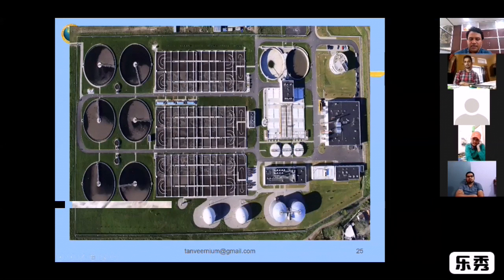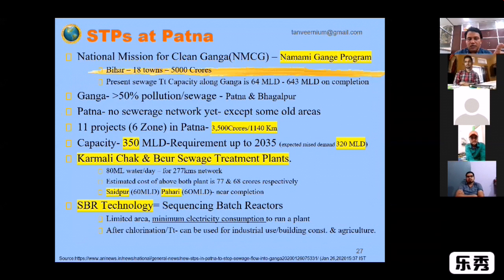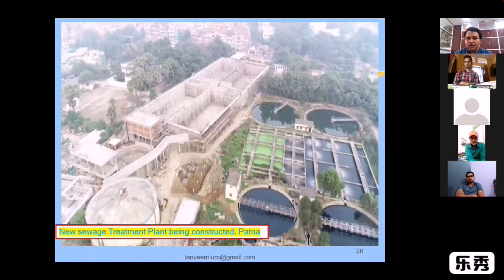You can see the satellite image — it's a whole unit of the city. If you remember this photo, this is Patna. This is the treatment plant in Patna. There are two treatment plants. This is the city of Patna.